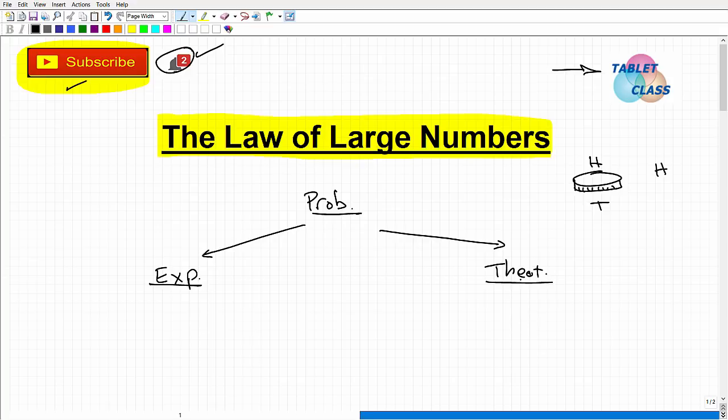So experimental and theoretical are different, okay? So let me kind of use this example with the heads and tails. If I wanted to know the theoretical probability of flipping this coin and it landing on heads, well, we've already determined that we have a one out of two chance or 50% probability that that's going to occur.